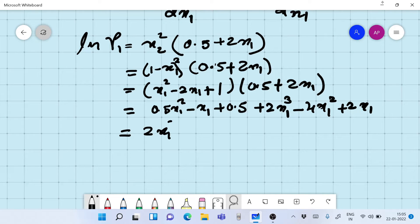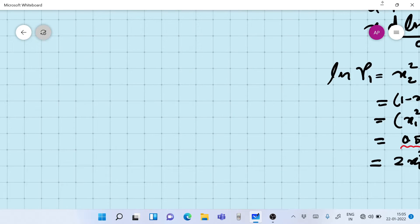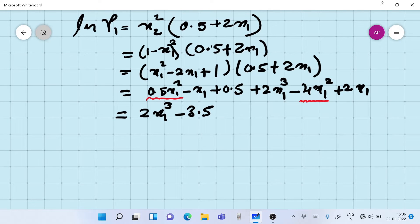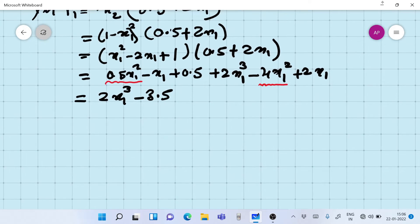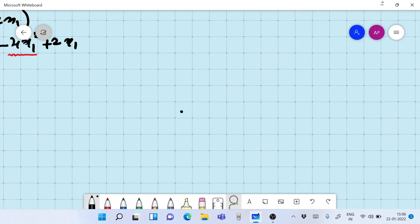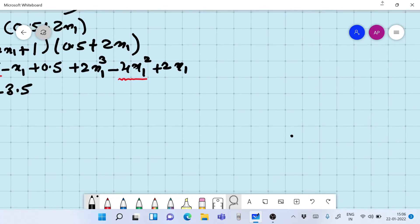We open the bracket and we are going to get 0.5 x1 square minus x1 plus 0.5 plus 2x1 cube minus 4x1 square plus 2x1. So let's rewrite this now.